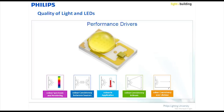The fifth element is color consistency in a beam. When you have grazing light on a wall, for example, you really want to make sure the light across the complete beam is going to be similar.